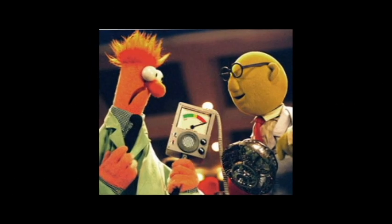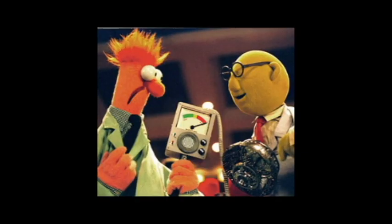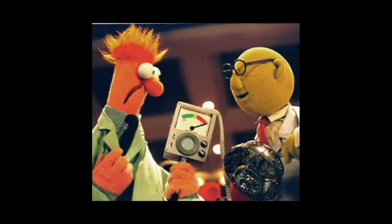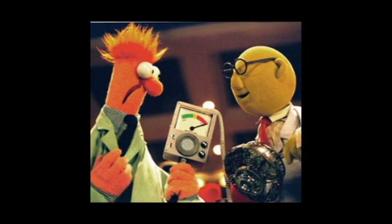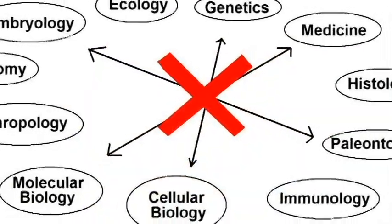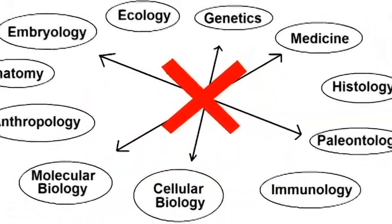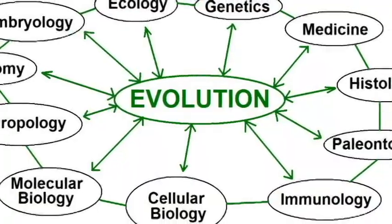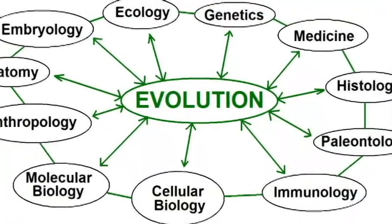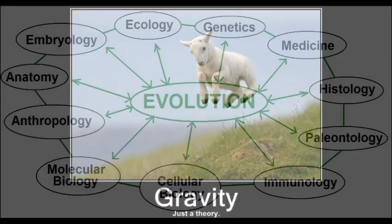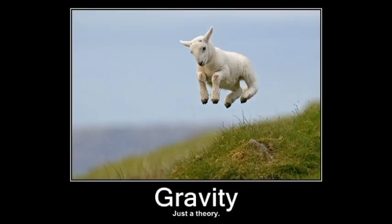Despite public opinion to the contrary, the scientific debate as to whether or not evolution happens ended nearly a hundred years ago. Now, evolution is known as the unifying theory of biology simply because it unites the disciplines. What this means is that advancements gained in one field can be applied to others. It's also worth noting that the theory of evolution isn't about whether or not evolution occurs.